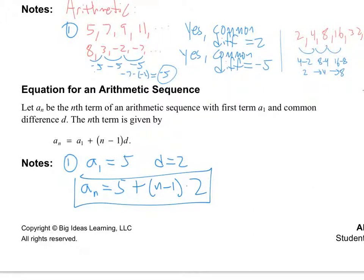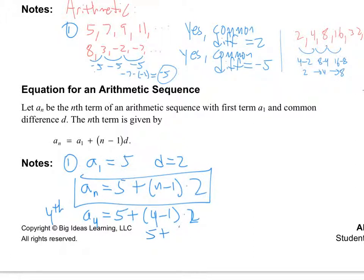Let's try the formula out. What is the fourth term? A sub 4 should be 5 plus (4 minus 1) times 2. Well, 4 minus 1 is just 3, times 2, so this is 5 plus 6, which is 11. And is 11 what we had for the fourth term? First term, second term, third term, fourth term — right there it is.